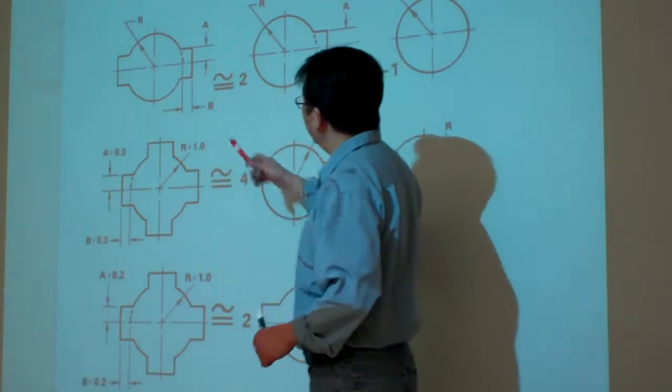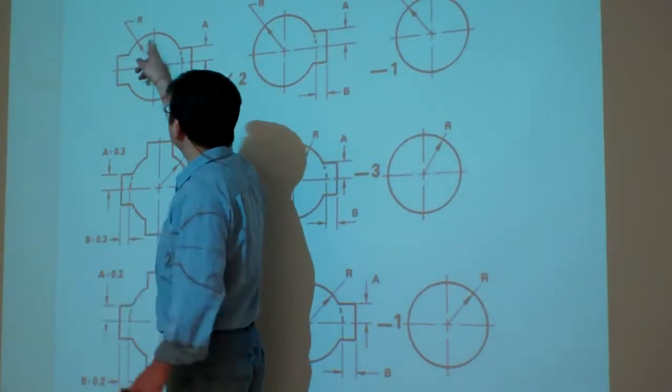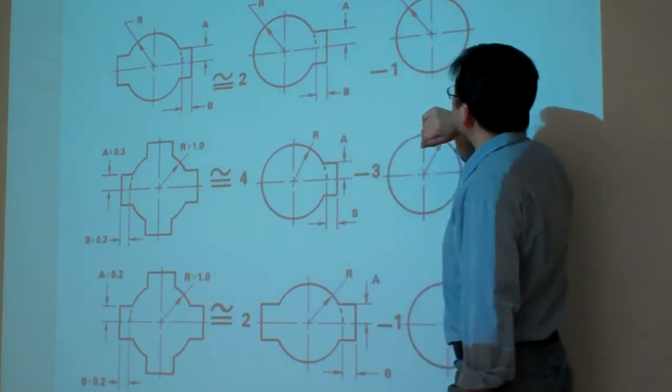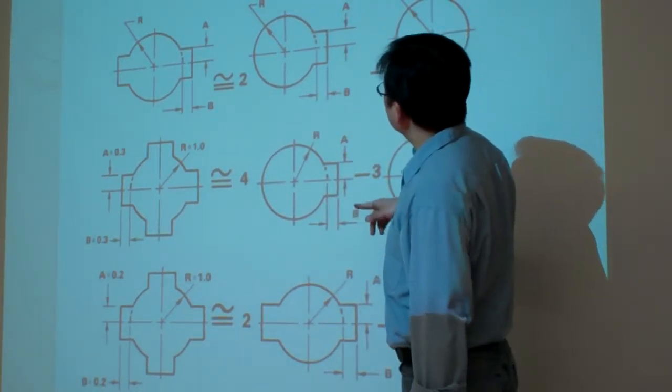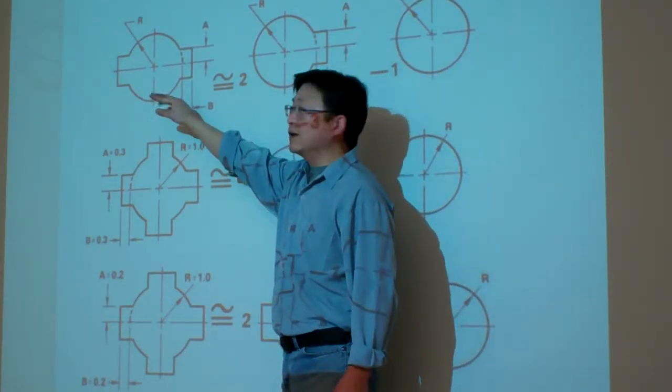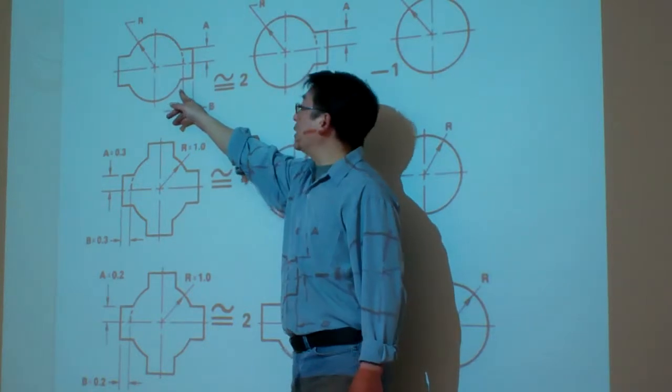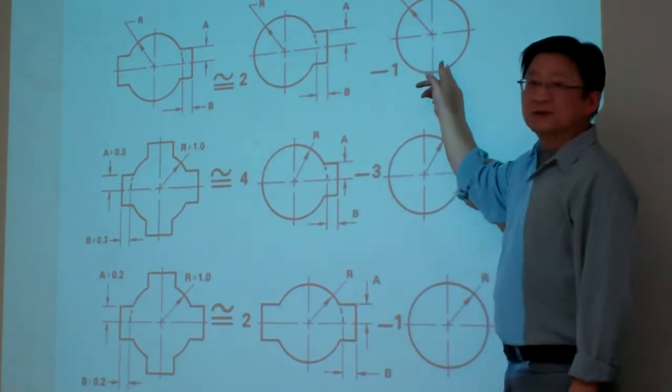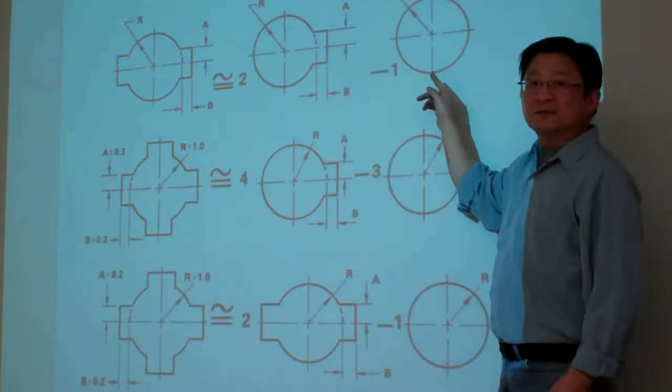For example, for a shaft with this shape, you could imagine is this, that the result of whatever the result of this one would be two times of this result minus one time of this. Can you see that one?